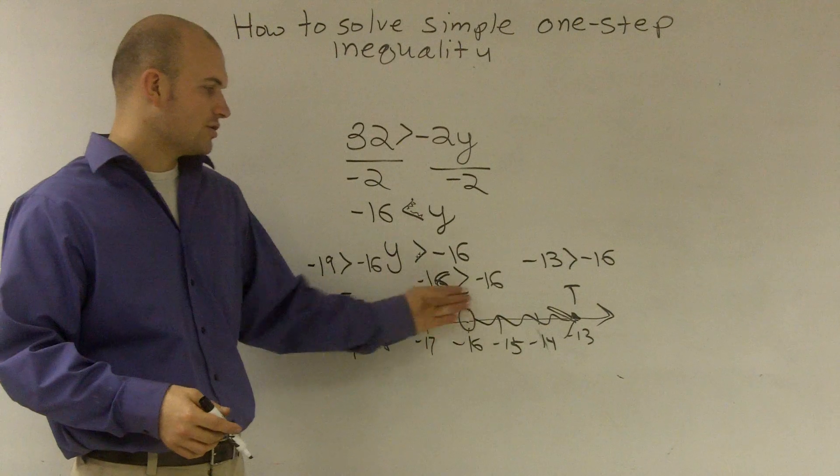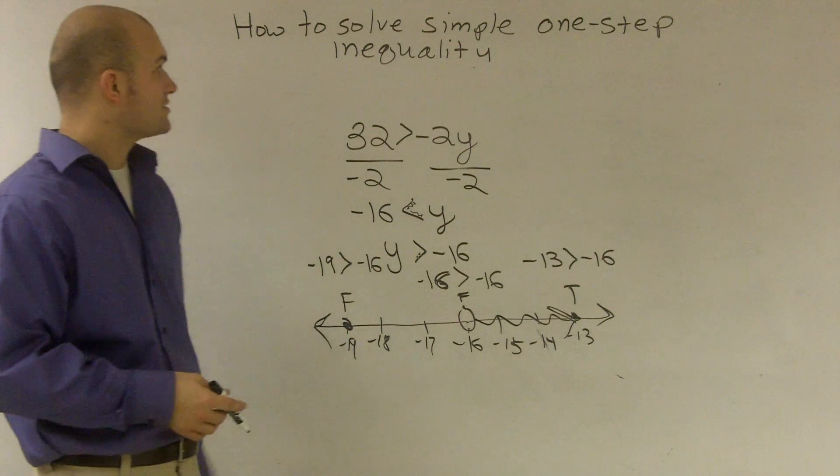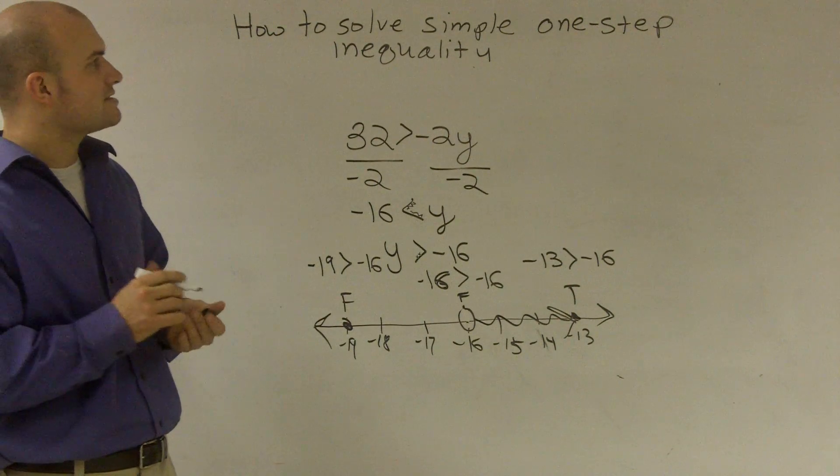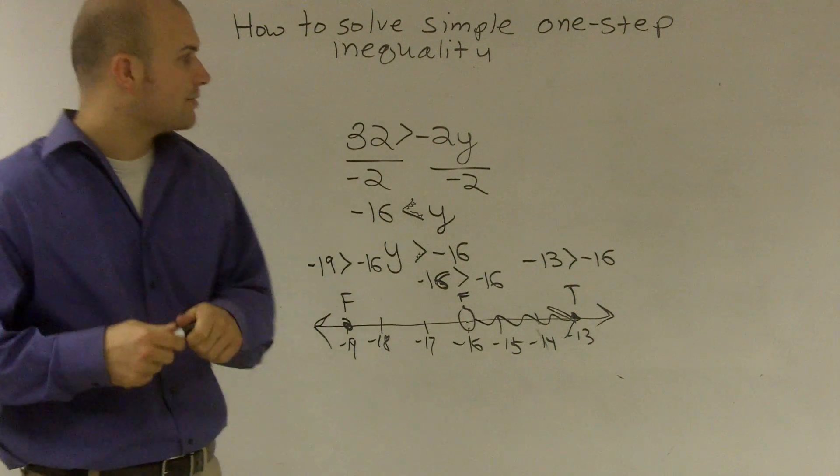So my graph is just going to be an open circle pointing to the right direction. So that's how you solve a simple one-step inequality with a negative coefficient.